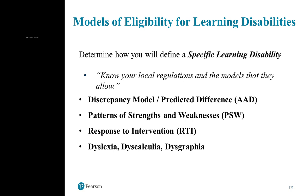Out of this grew Response to Intervention — RTI — asking: why wait for them to fail? Why not identify early on through providing best practice interventions over strategic windows of time, then see how they responded to teaching modifications? If the problem remained, you would ratchet up support. If they don't respond to more support, you refer for IEP evaluation. Some states have said if you do RTI and ratchet it up and they're showing no progress, that's sufficient to identify for special ed.